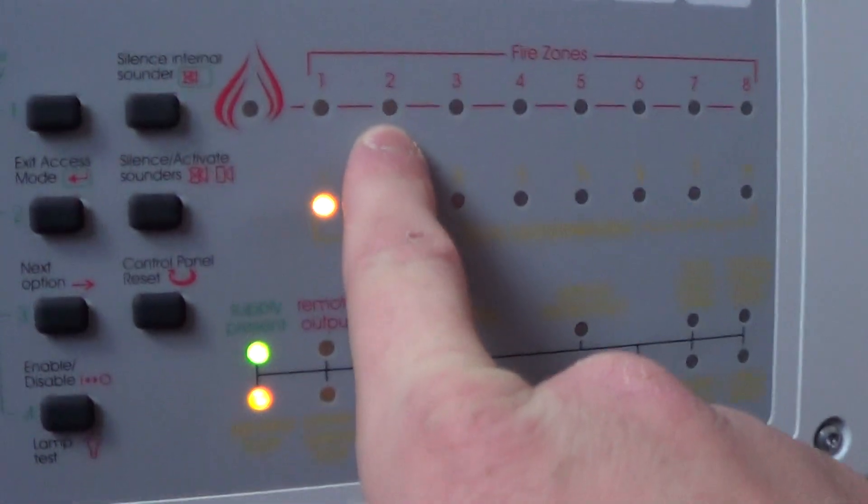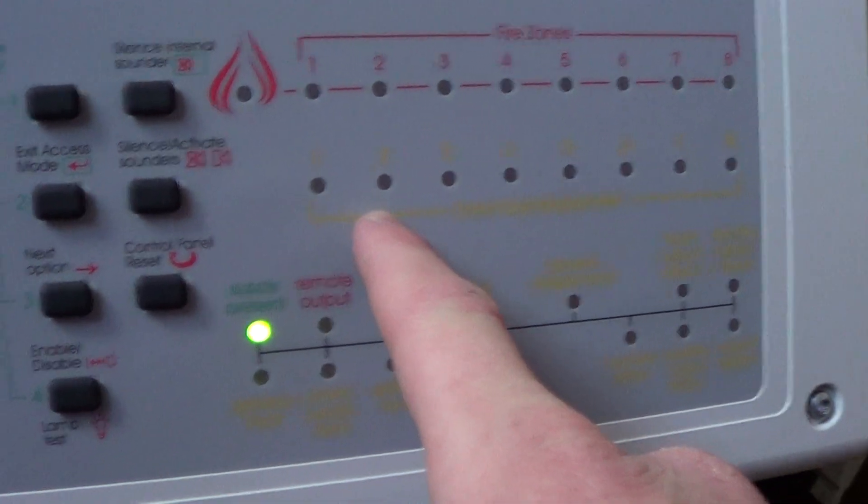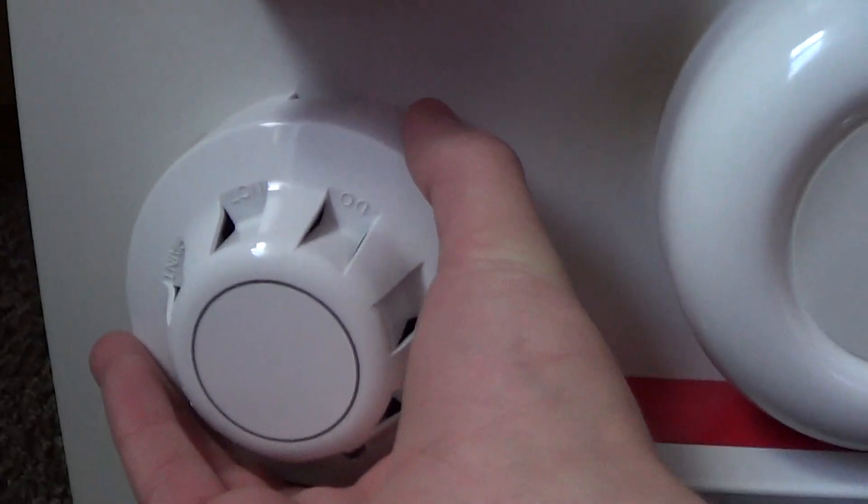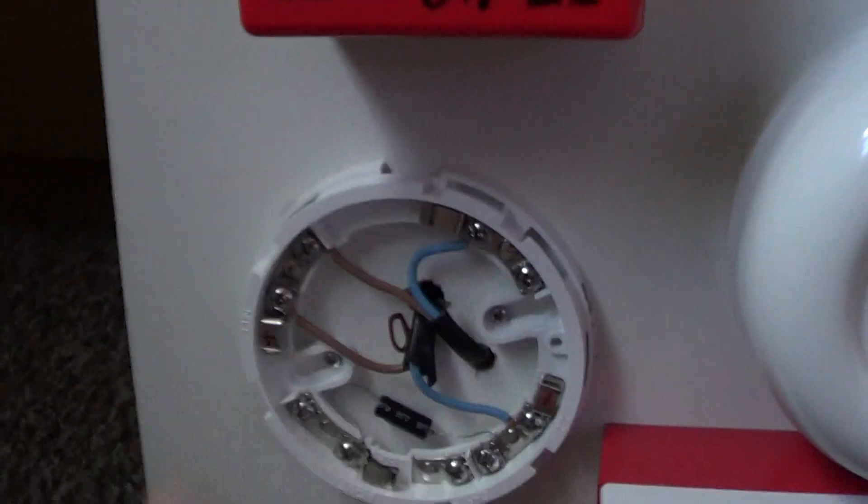One thing I've done on this is zone two has an end of line resistor, but as soon as I remove the detector head, see...